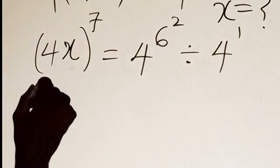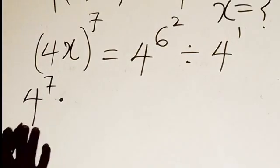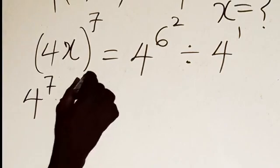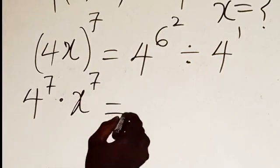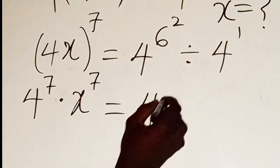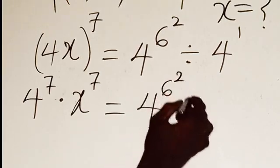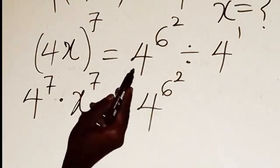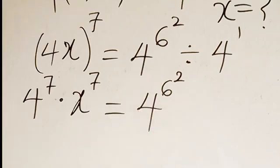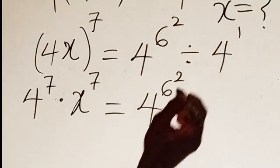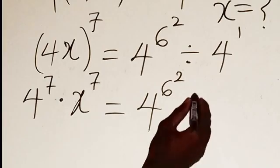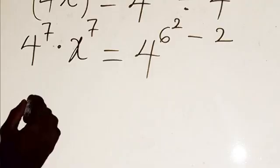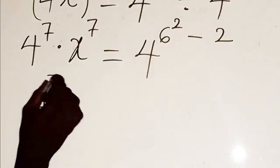So now from here by having 4 to the power of 7 multiplied by x to the power of 7, then equals 4 to the power of 6 to the power of 2. Then here since we are having 4 here and we are having 4 the same basis, so we can subtract the powers.